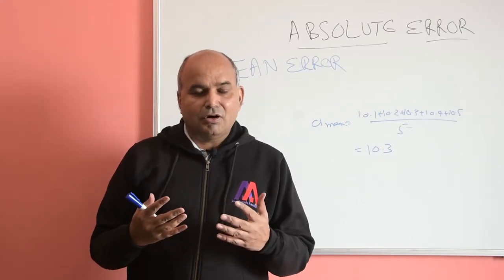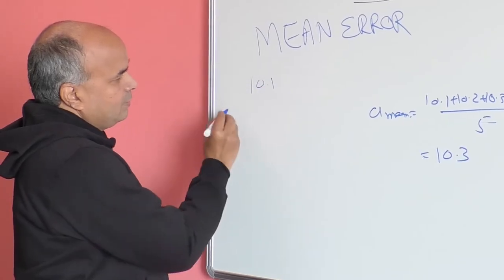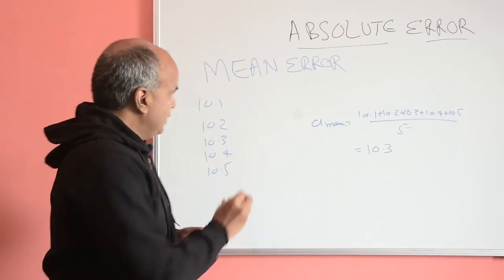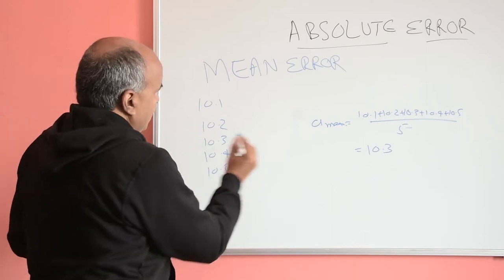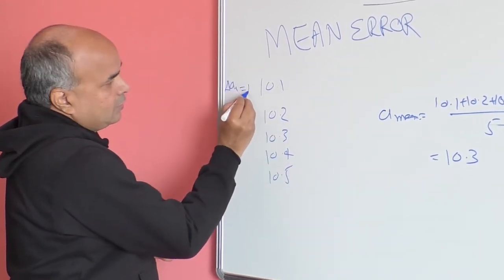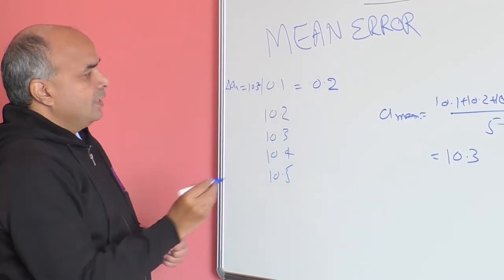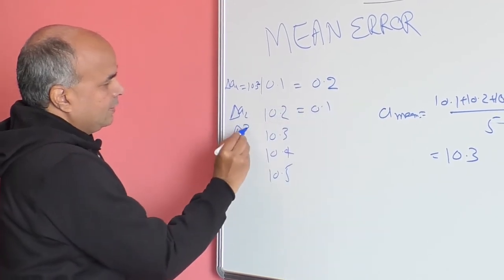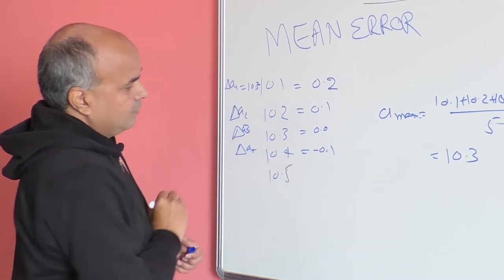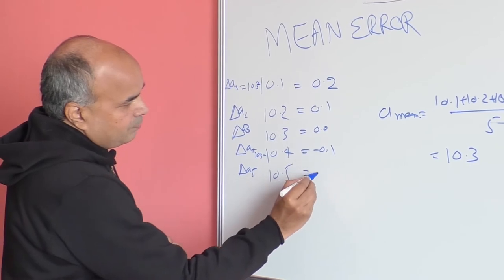Once we know the mean value, we calculate the absolute error. The individual errors are: Δa1 = 10.3 − 10.1 = 0.2, Δa2 = 0.1, Δa3 = 0.0, Δa4 = 10.3 − 10.4 = −0.1, and Δa5 = −0.2.